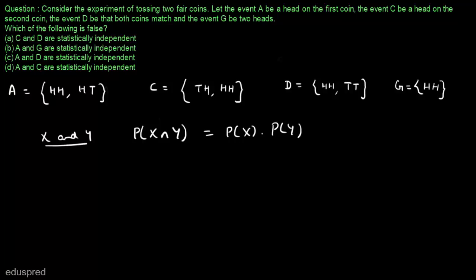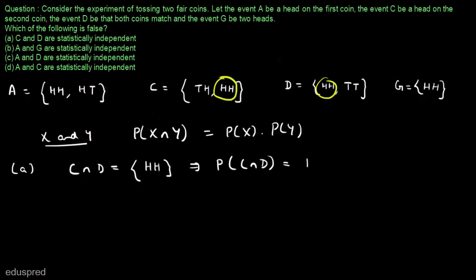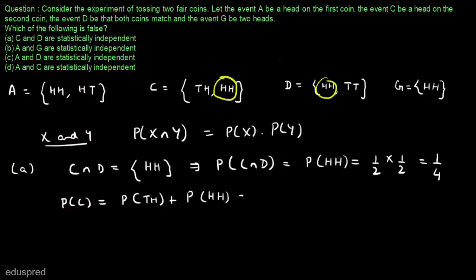Let's test this step by step. In part A, we are given that C and D are statistically independent. To check this, let's find C ∩ D. C ∩ D = {HH}, since HH appears in both C and D. This implies P(C ∩ D) = P(HH) = 1/2 × 1/2 = 1/4. Now, P(C) = P(TH) + P(HH) = 1/4 + 1/4 = 1/2.